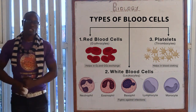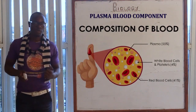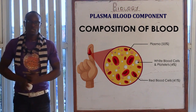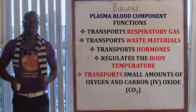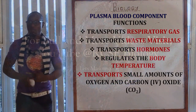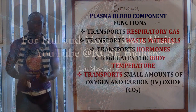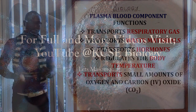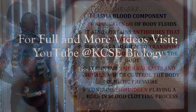Let's look at the first component of blood, which is the plasma. The plasma is the liquid component of the blood and it has the following functions. The plasma serves as a transporting medium for respiratory gases, waste materials, and also for the transportation of different hormones in the body. The plasma also serves as a transporting medium for small amounts of dissolved gases, that is oxygen and carbon dioxide.